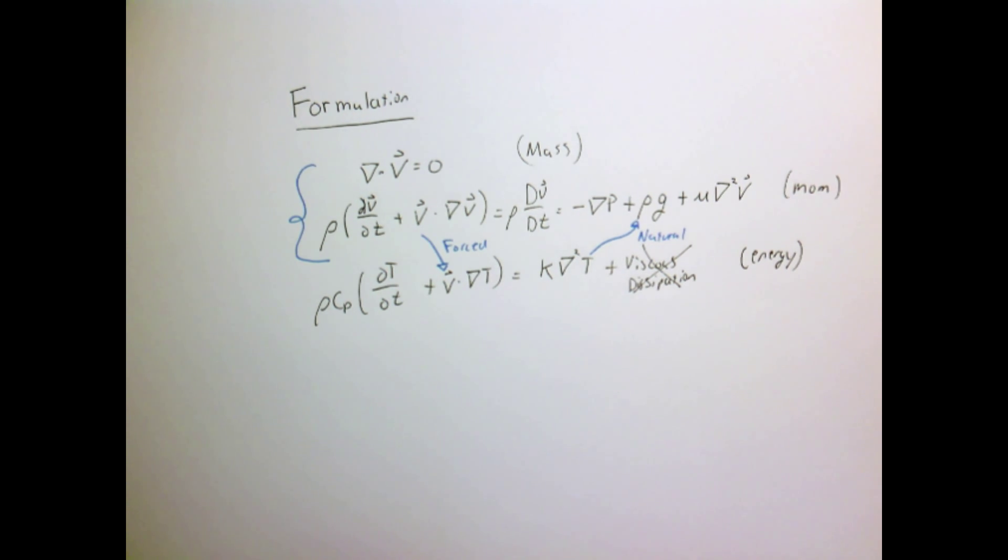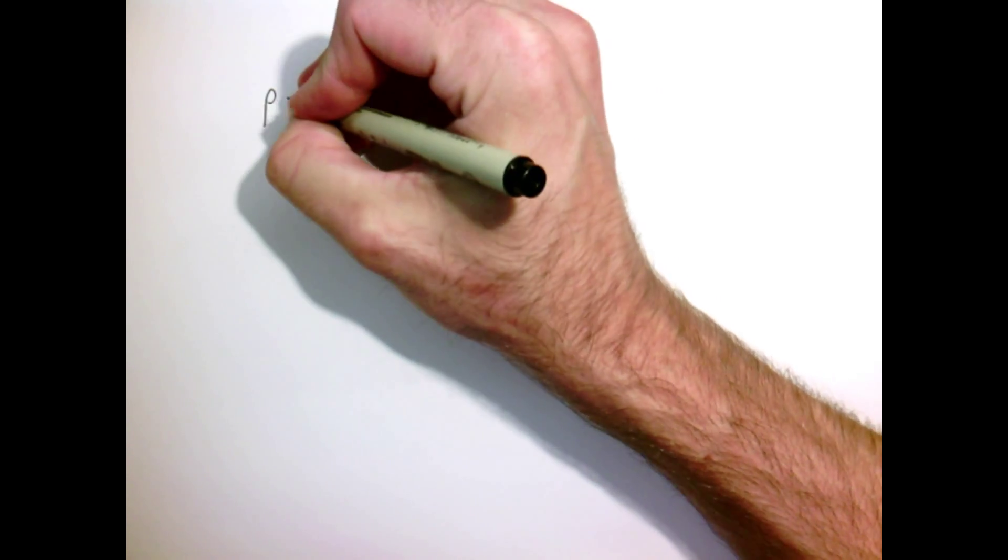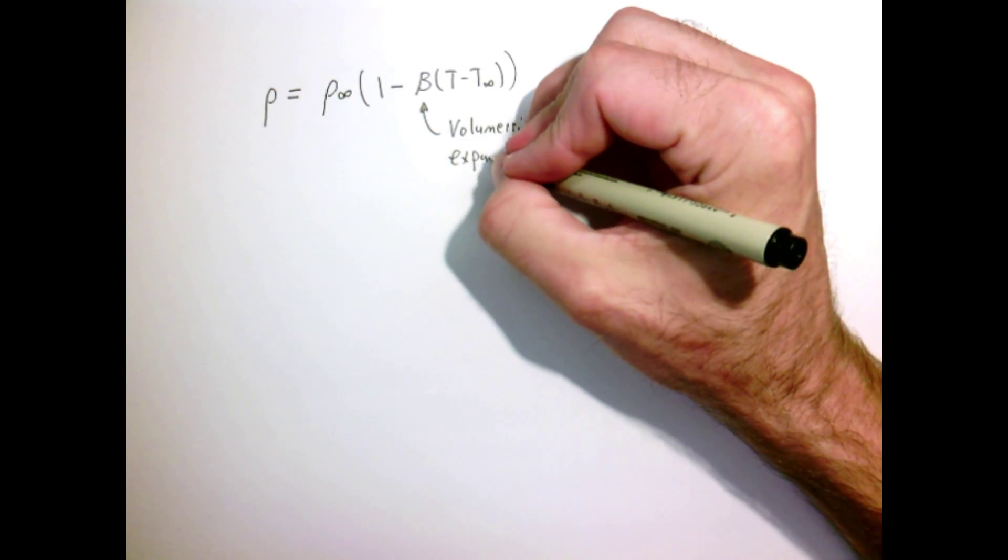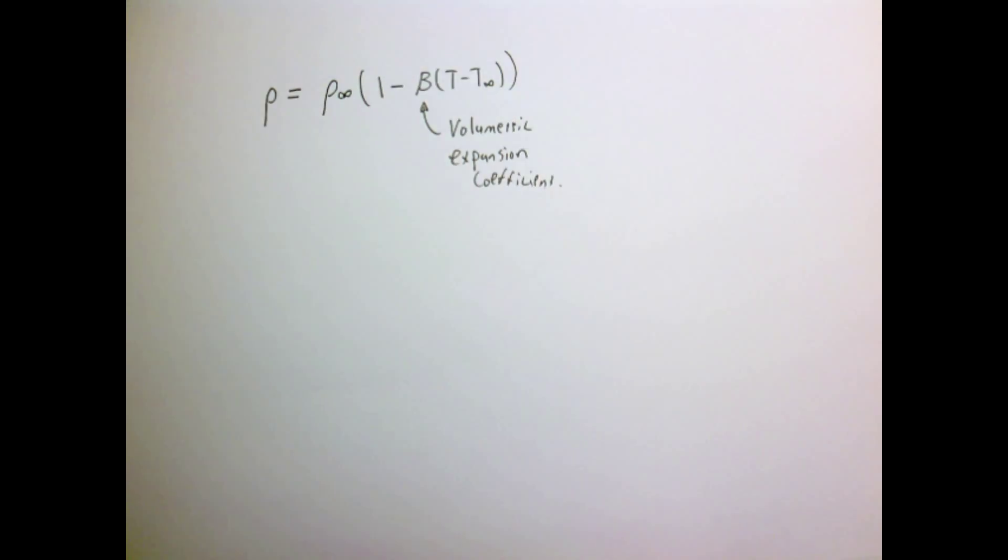Let's make the problem dimensionless. Before we can proceed with the dimensional analysis, we need a model for the fluid density. The simplest thing we can do is say that the density is simply linear with temperature.